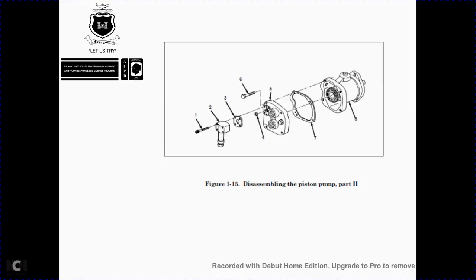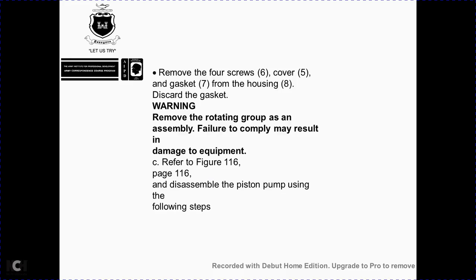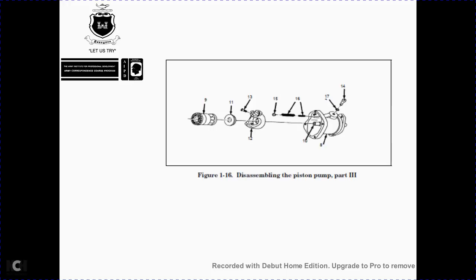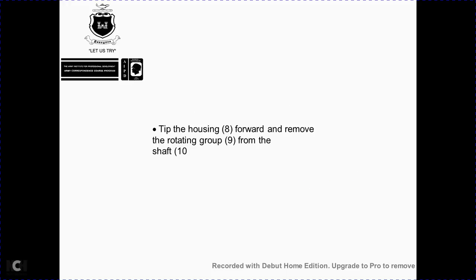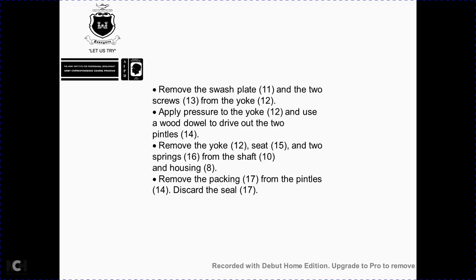Disassembling the piston pump part 2 (refer to figure 1-16, page 1-16): remove force group 6, cover 5, gasket 7, and housing 8; discard gasket 7. Remove the rotating cup assembly. Refer to figure 1-16: tip housing 8 forward and remove rotating group 9 from shaft 10. Remove swash plate 11 using two screws from the yoke. Drive out the two dowel pins 14 from the yoke 12. Remove yoke 12 and seat 15 with the two springs 16 from housing 8. Remove packing 17 using pin tools 14 and discard seal 17.